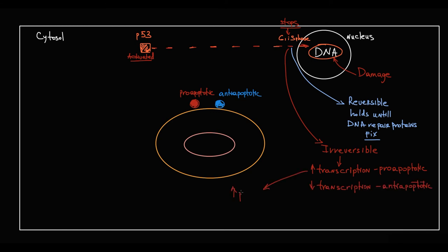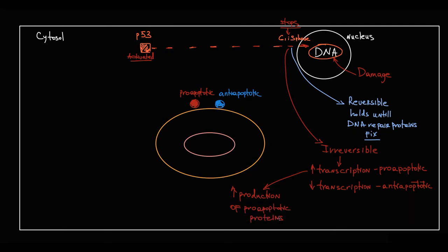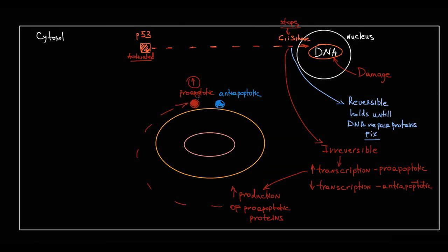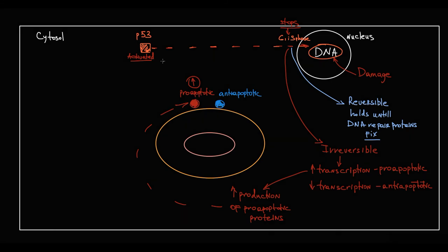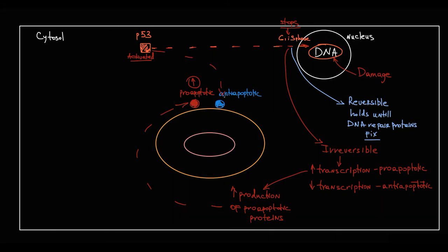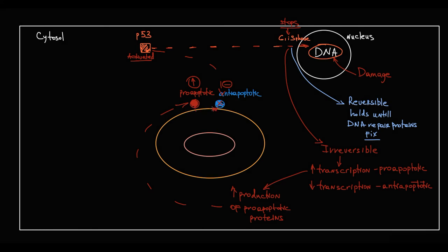The increased production of pro-apoptotic proteins causes them to migrate to mitochondria and shift the pro- to anti-apoptotic balance towards apoptosis. Also, some portion of activated p53 proteins migrate from the cytosol to mitochondria, where they bind to anti-apoptotic proteins and markedly decrease their anti-apoptotic activity. This aggravates the imbalance and thereby triggers apoptosis.